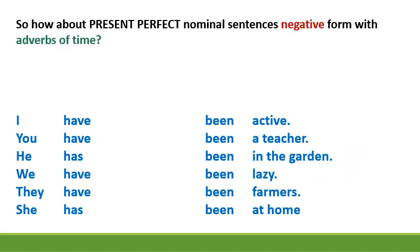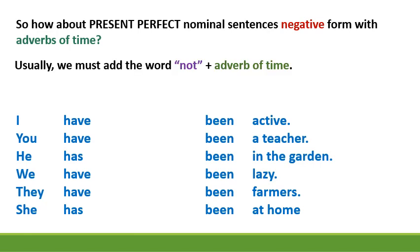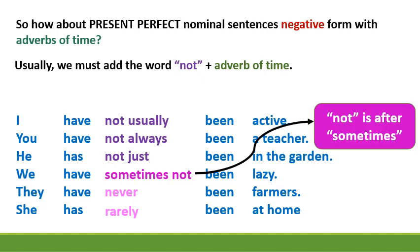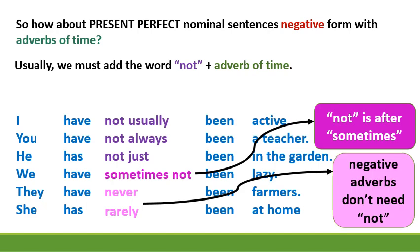Well done. So, how about present perfect nominal sentences in the negative form with adverbs of time? Usually we must add the word not plus the adverb of time: have not usually been, have not always been, has not just been, have sometimes not been, have never been, has rarely been. Note: not is after the word sometimes, not before it. Negative adverbs like never and rarely don't need not.